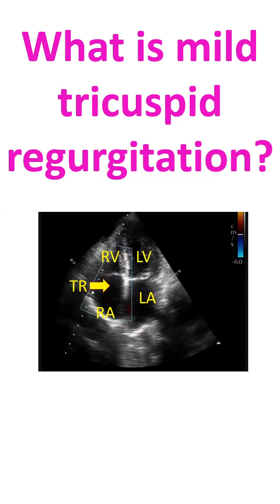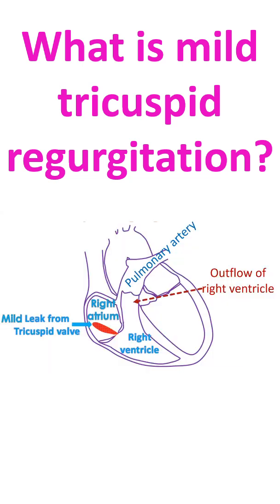The image appears upside down because the echo beam is looking at the heart from the lower part. Mild leak in the tricuspid valve is not of much significance.